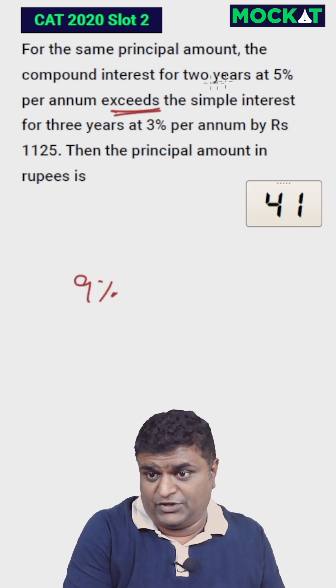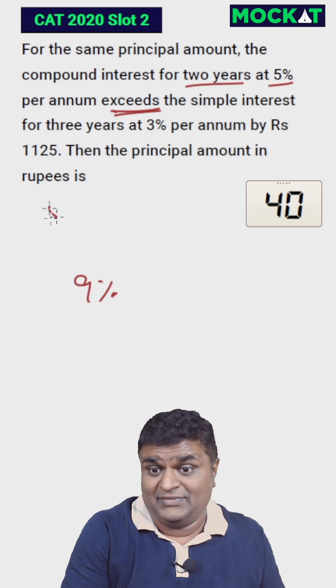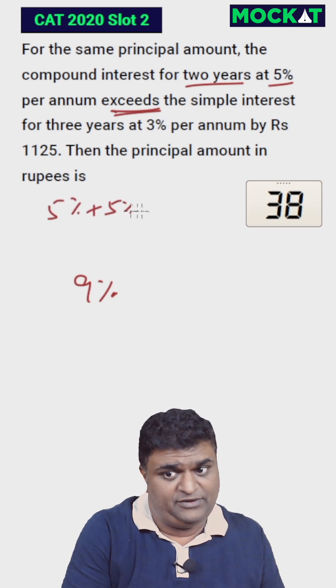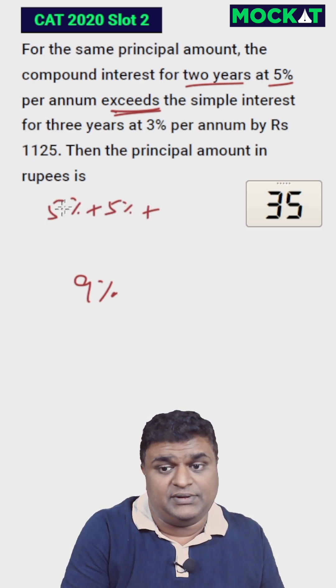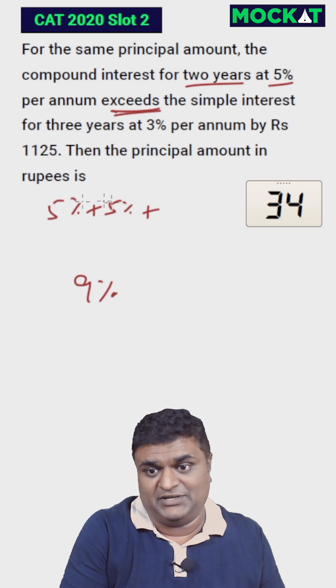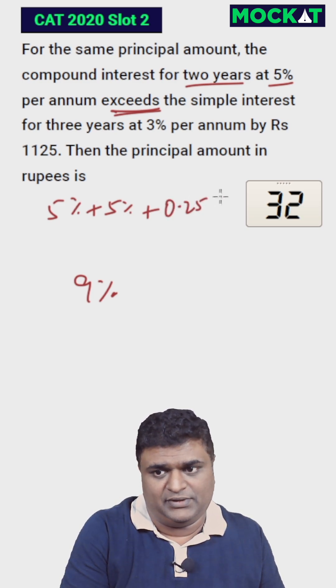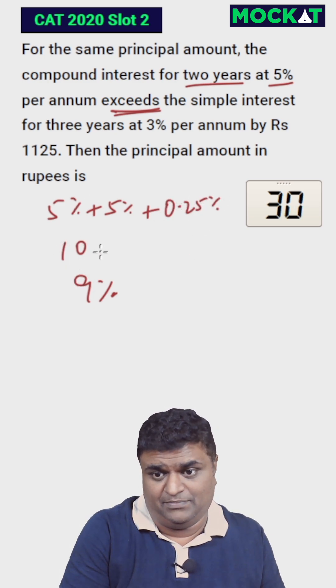Compound interest for 2 years at 5% per annum is nothing but 5% plus 5% plus the interest on interest — 5% of 5. I hope you're clear with the concepts; then it's going to be simple for you.